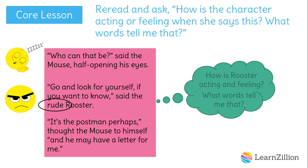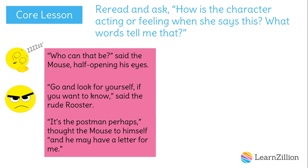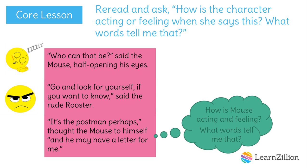Let's move to our last piece of talking. It's the postman, perhaps, thought the mouse to himself, and he may have a letter for me. How is mouse acting and feeling here? What words tell me that? I don't see words like rude or half opening his eyes. I see that he's thinking to himself. I think mouse is still probably feeling a little sleepy because he's just woken up — he was sleepy a few lines ago. Mouse is still feeling sleepy.